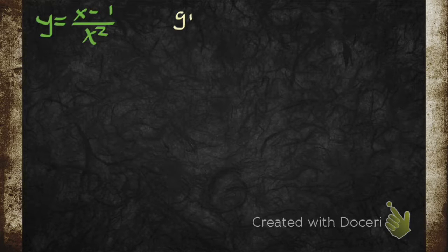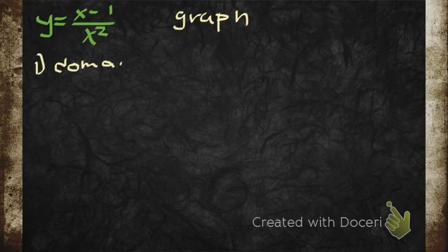Bam. Remember, you can pause this. What are we trying to do? We're trying to graph. Graph what? We're graphing x minus 1 over x squared.